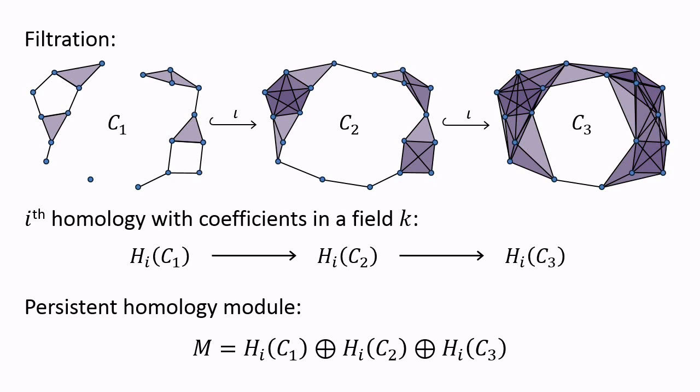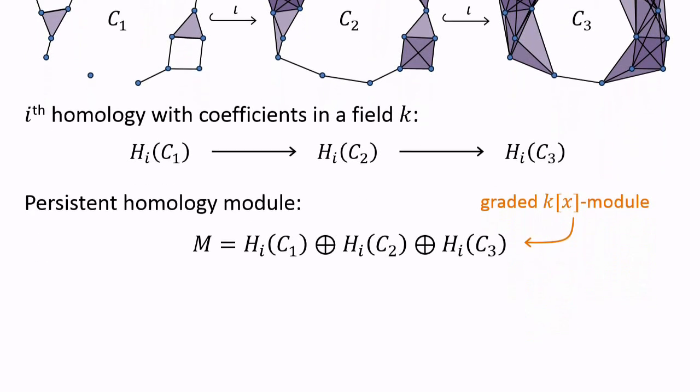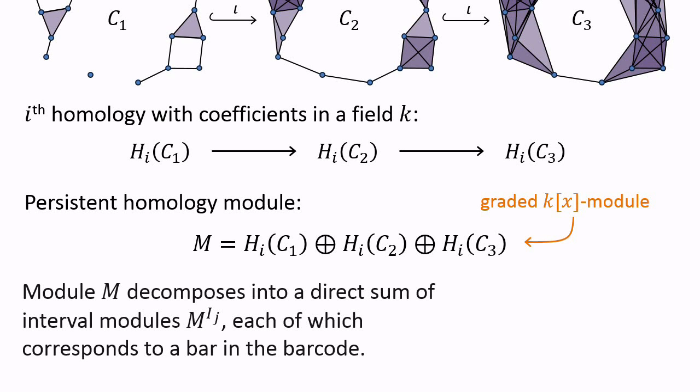The direct sum of the homology vector spaces is an algebraic module, in fact, a graded module over the polynomial ring k adjoin x. The variable x acts as a shift map, taking each homology generator to its image in the next vector space. Furthermore, a structure theorem tells us that a persistence module decomposes nicely into a direct sum of simple modules, each corresponding to a bar in the barcode. In other words, a barcode really is an algebraic structure.